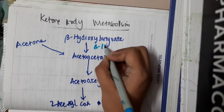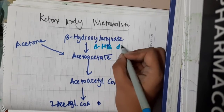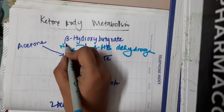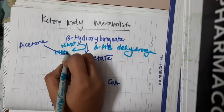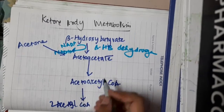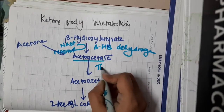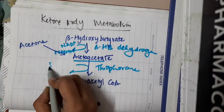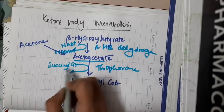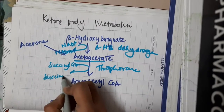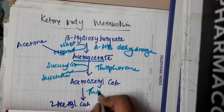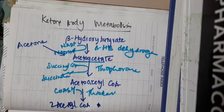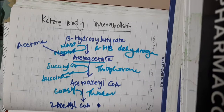Beta-hydroxybutyrate, in the presence of beta-hydroxybutyrate dehydrogenase, forms acetoacetate. During this process, NAD+ gets converted to NADH+H+. This acetoacetate, in the presence of thiophorase, forms acetoacetyl-CoA. During this process, succinyl-CoA gives rise to succinate. This acetoacetyl-CoA, in the presence of thiolase, where coenzyme-A-SH is added, gives two molecules of acetyl-CoA.